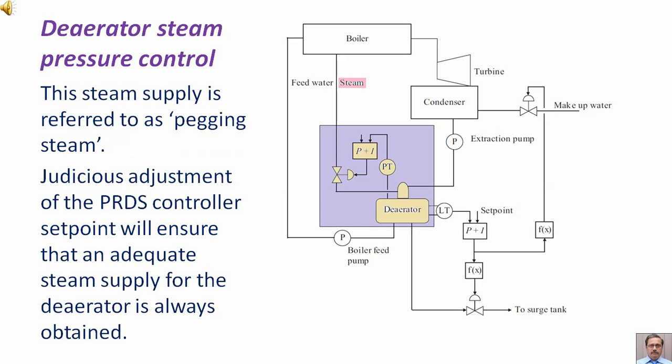This steam supply is referred to as pegging steam. Judicious adjustment of the PRDS controller set point will ensure that an adequate steam supply for the deaerator is always obtained.